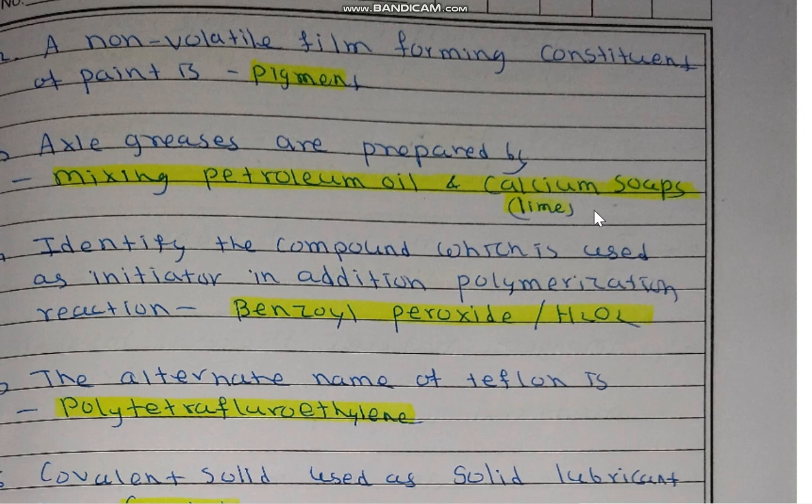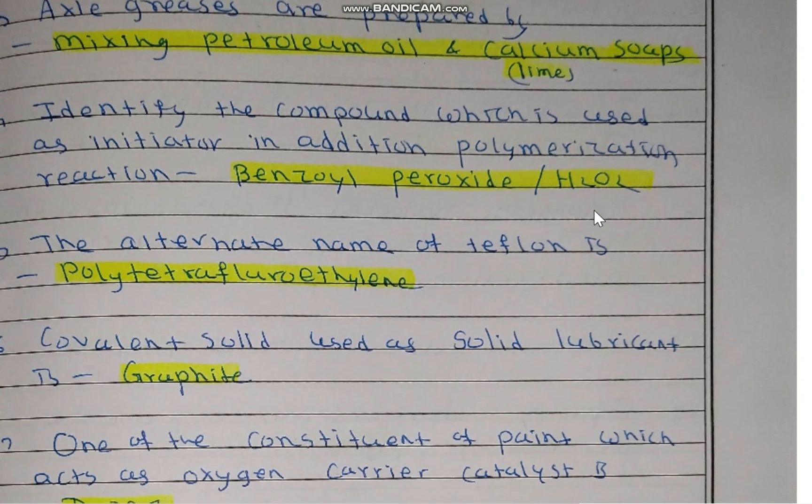Identify the compound used as an initiator in addition polymerization: benzoyl peroxide or hydrogen peroxide — they are used in addition polymerization as initiators.